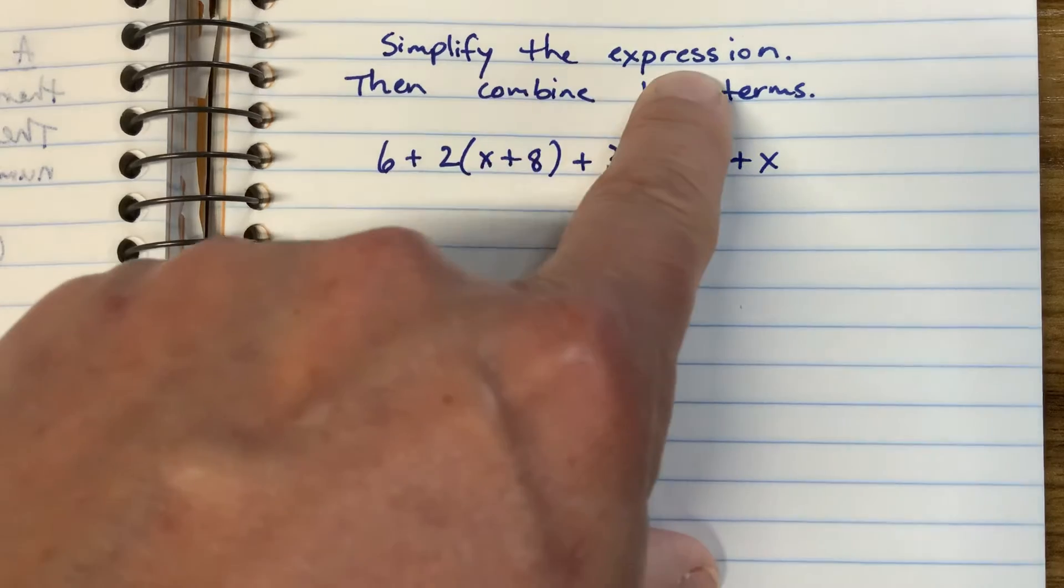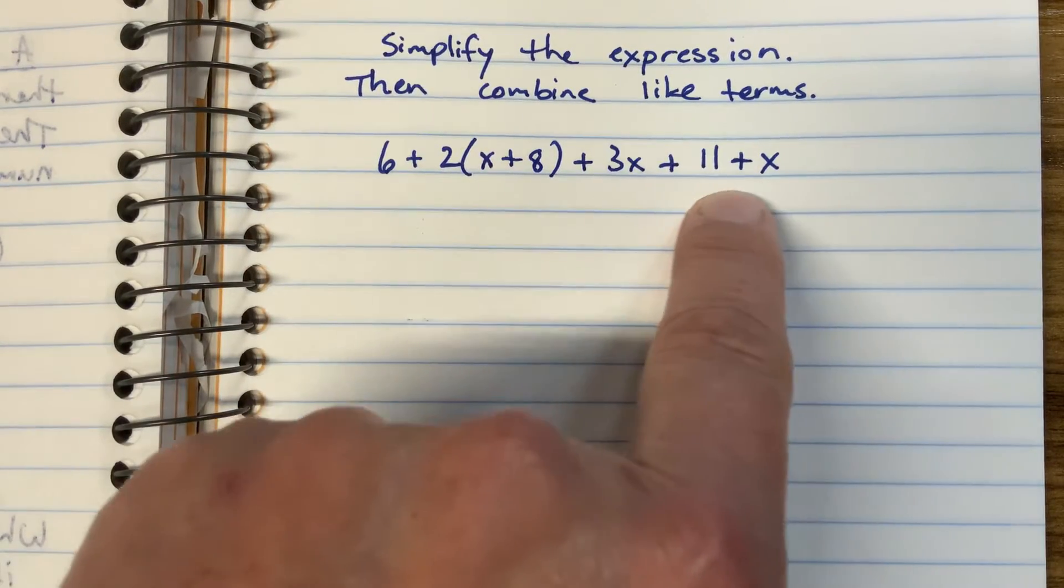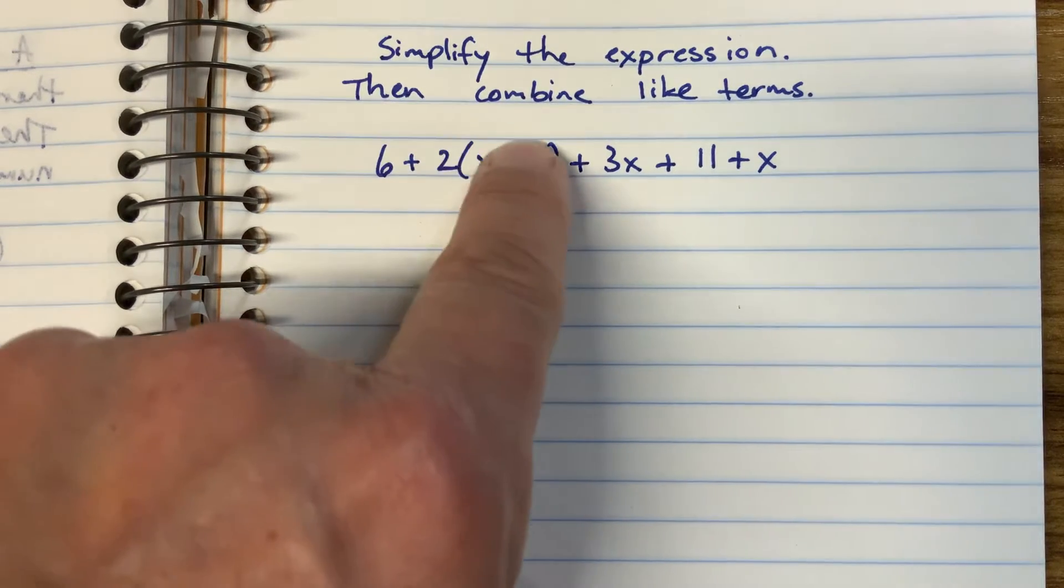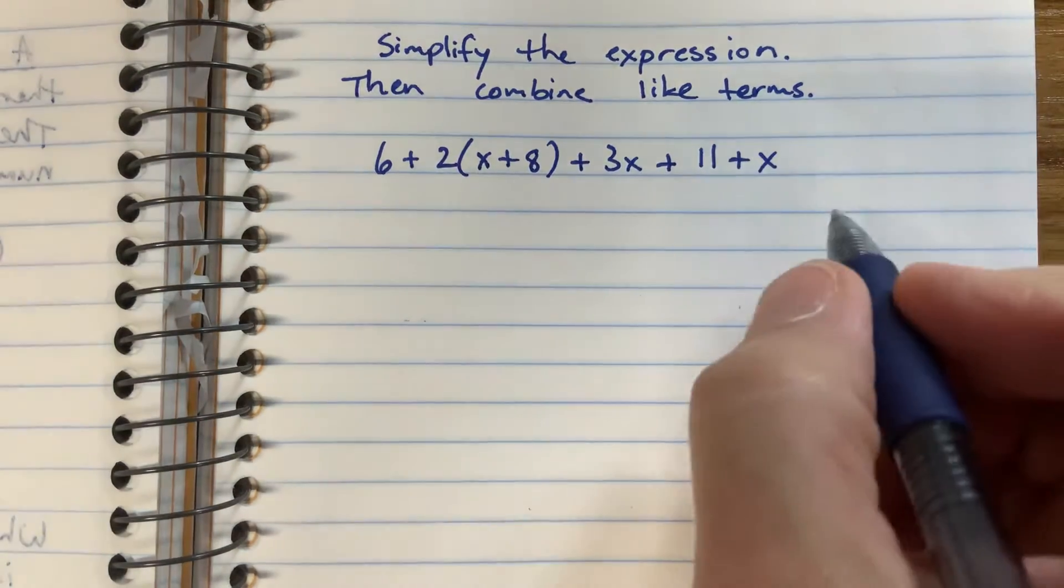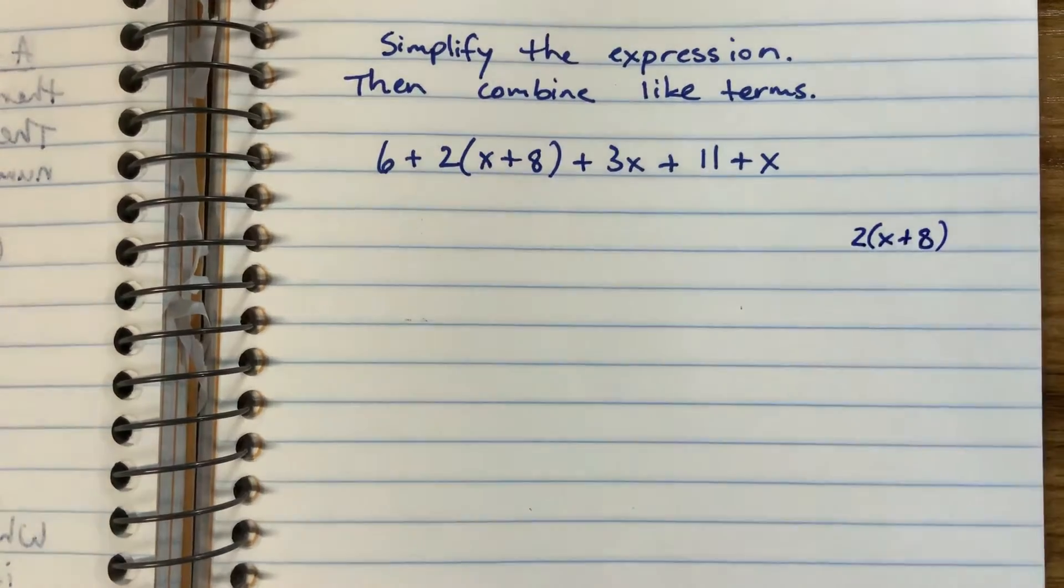To start with, we're going to simplify the expression. When I look at this expression, there's not much to simplify except one section here, this little section right here: 2 times (x+8). If I wrote that separately, 2 times x plus 8, what does that look like to you?